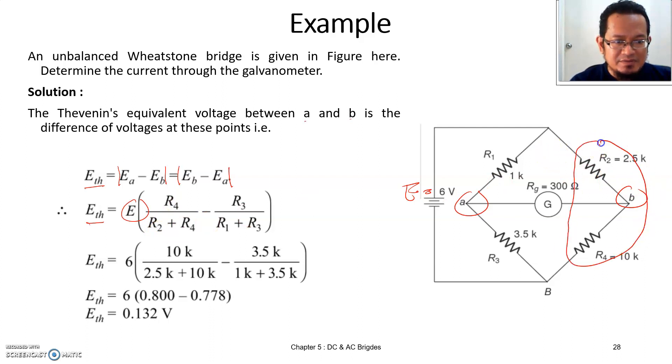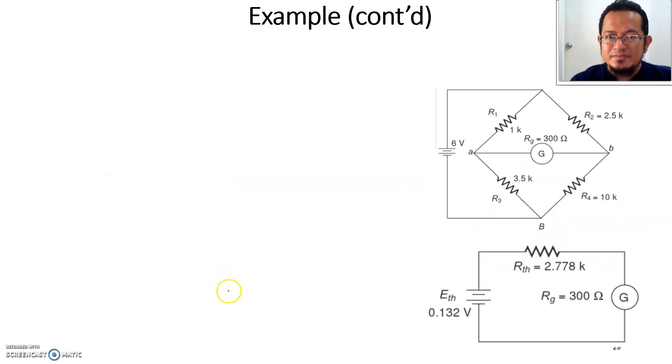Minus the ratio for this arm of the branch. You plug in all the numbers and you can calculate that the Thevenin voltage is around 0.132 volts. Now you're done with Thevenin voltage.